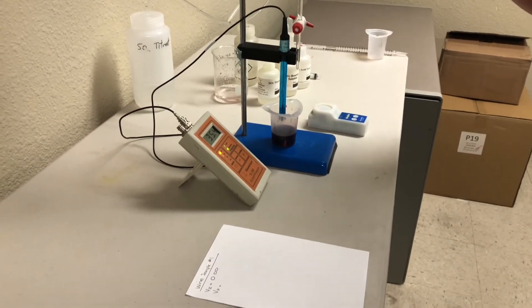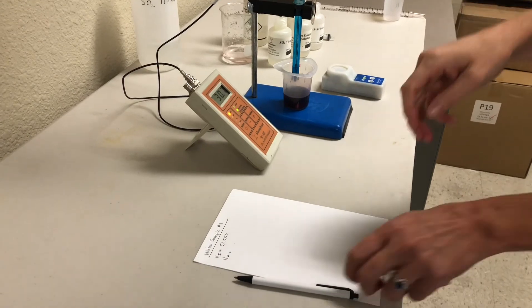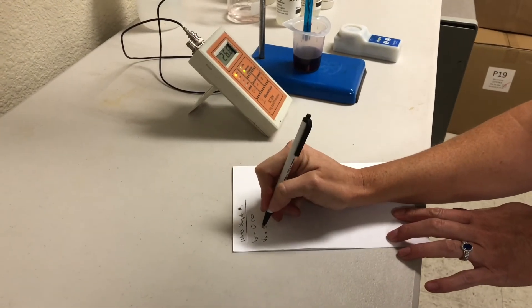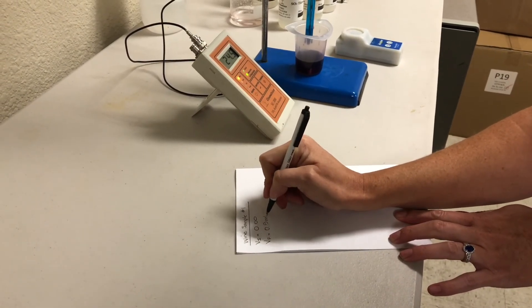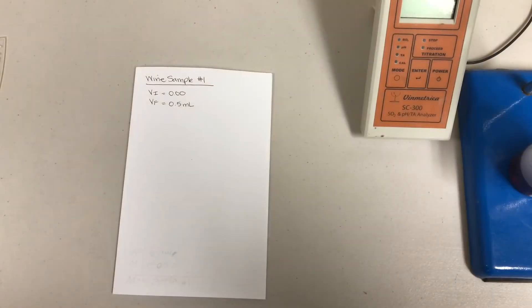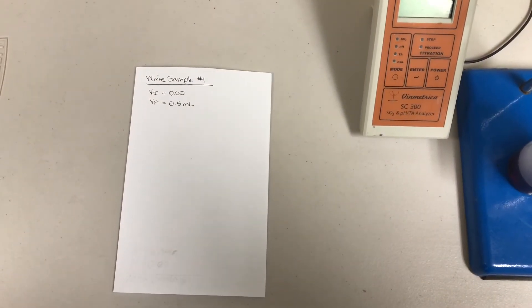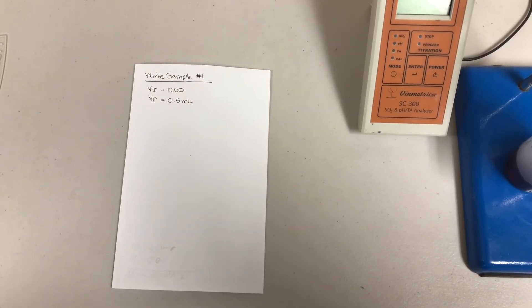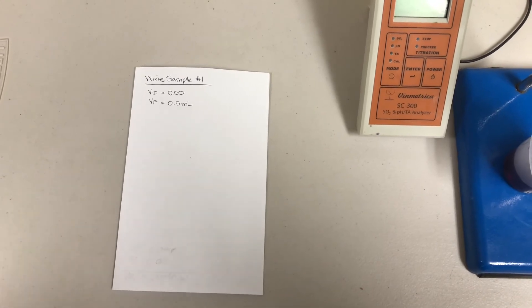So the burette is now reading 0.5 mils. To calculate the parts per million of SO2 in your wine sample, you'll use a simple algebraic equation.